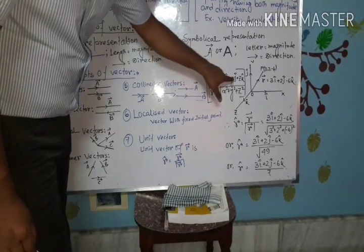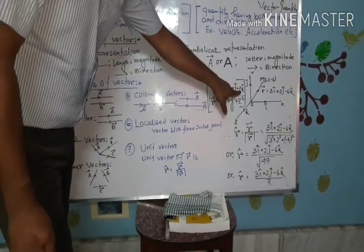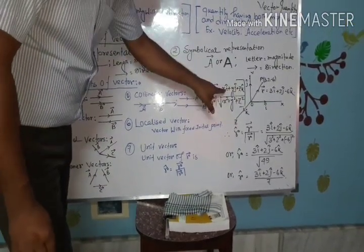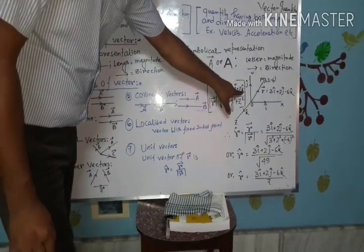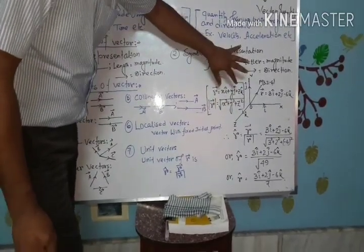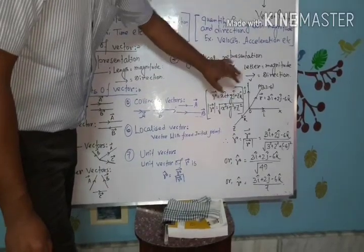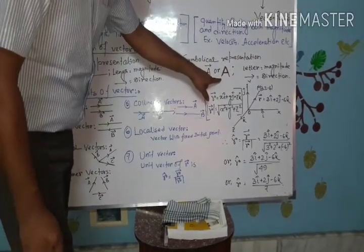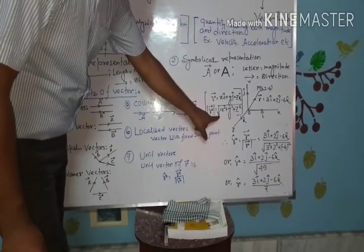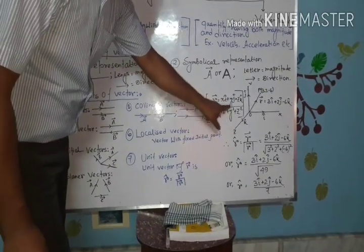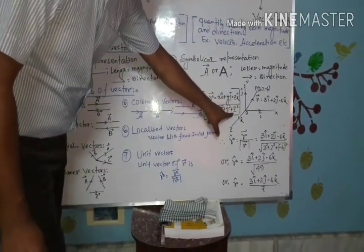The vector representation of a point with coordinates (X, Y, Z) is: R-vector equals X·i-cap plus Y·j-cap plus Z·k-cap. The magnitude of this vector is determined by the formula: root over of X-squared plus Y-squared plus Z-squared.